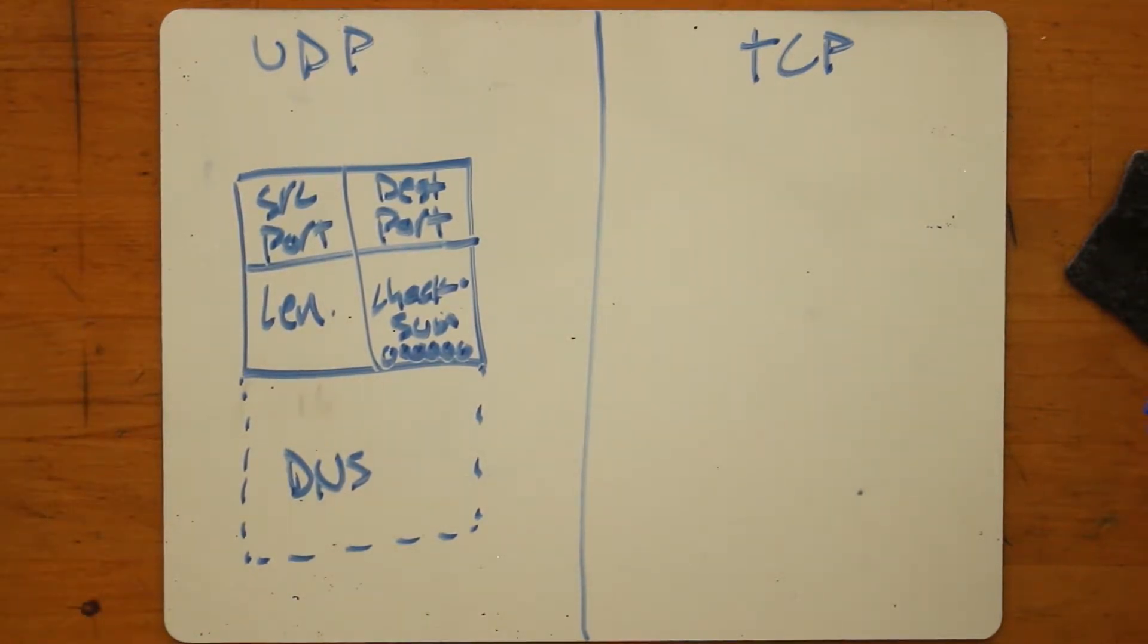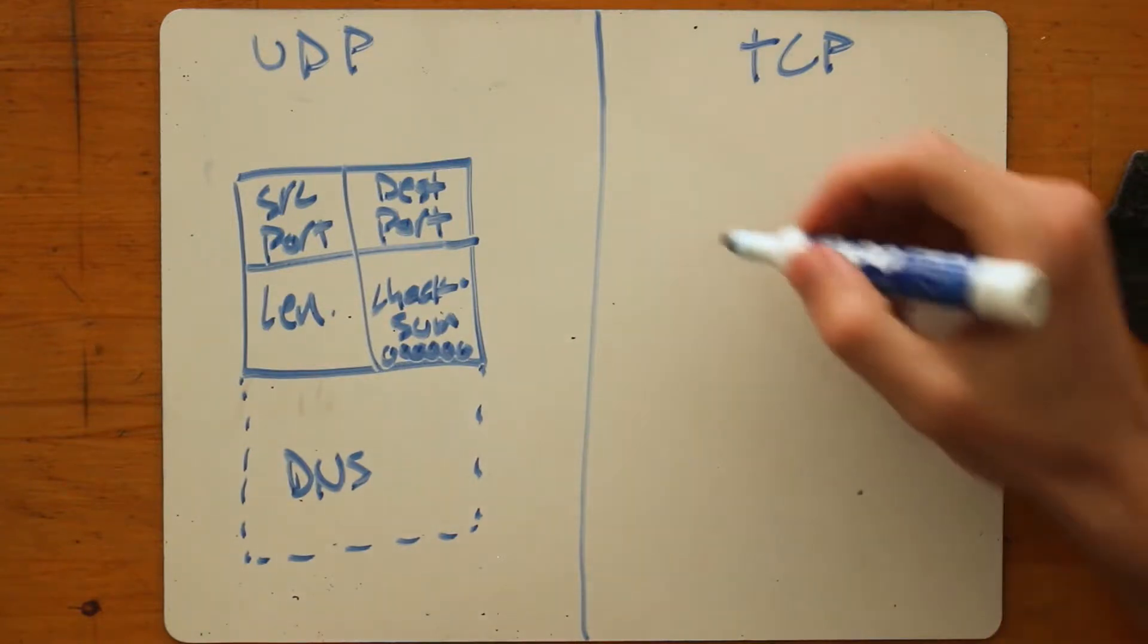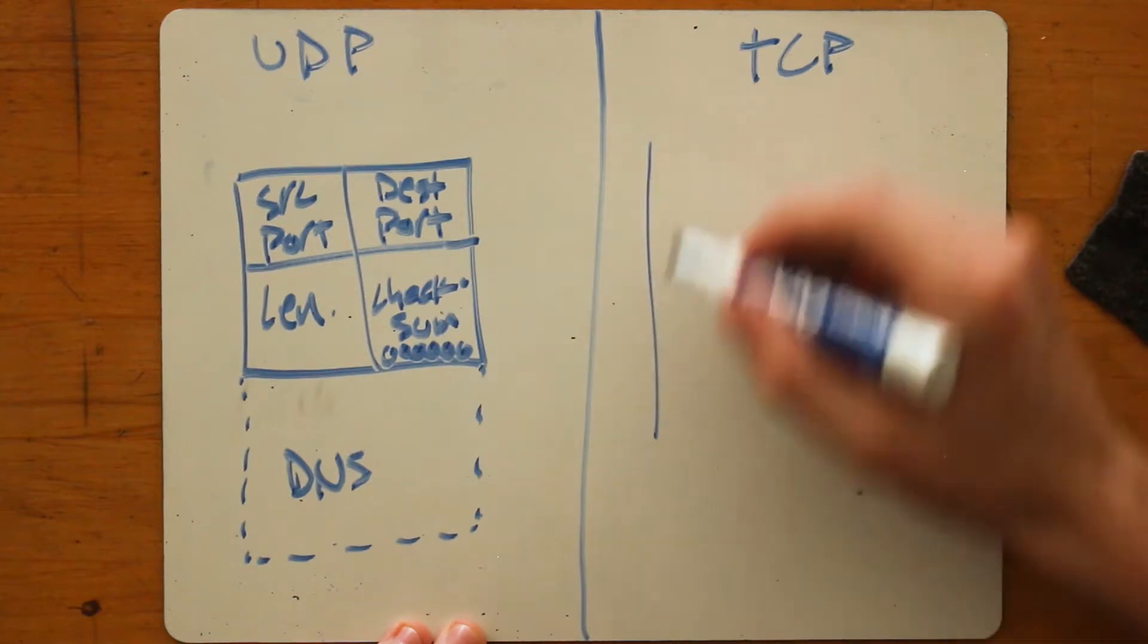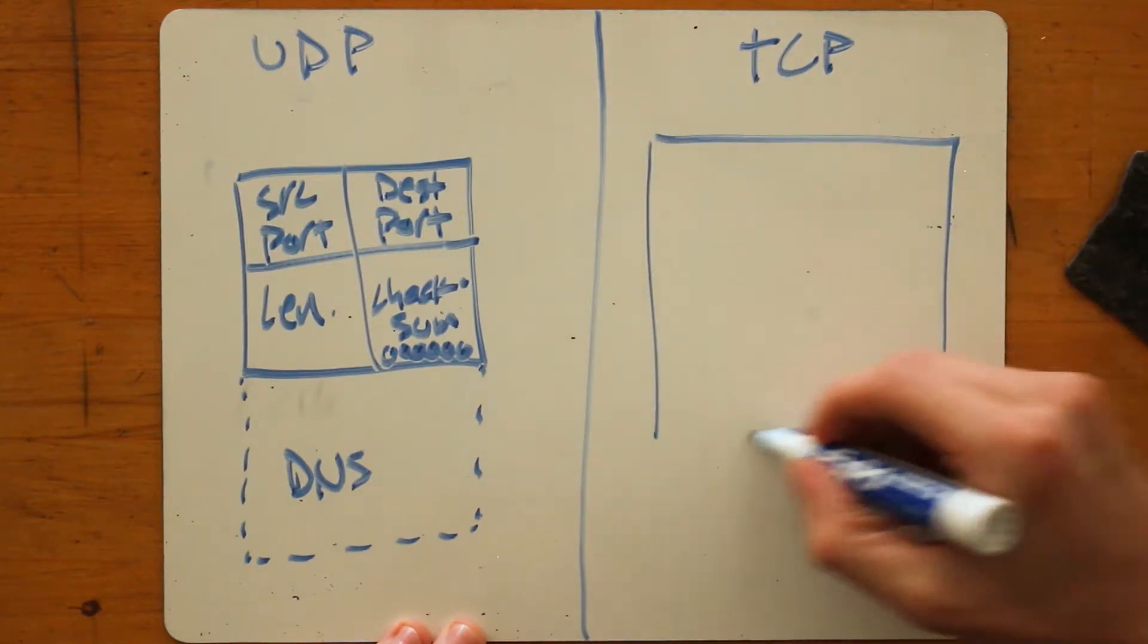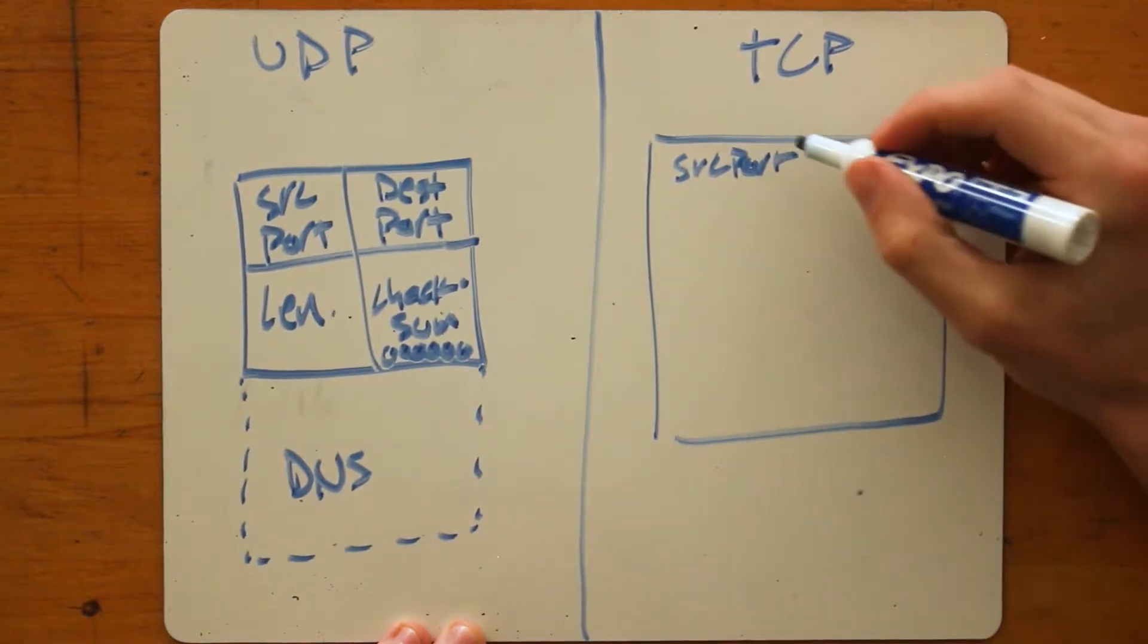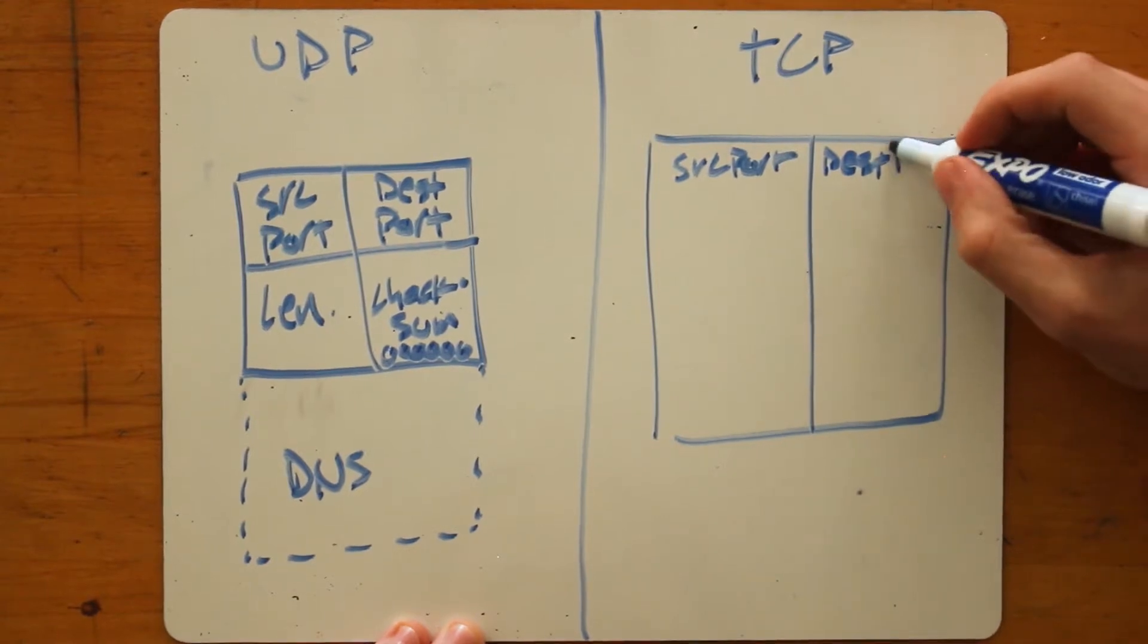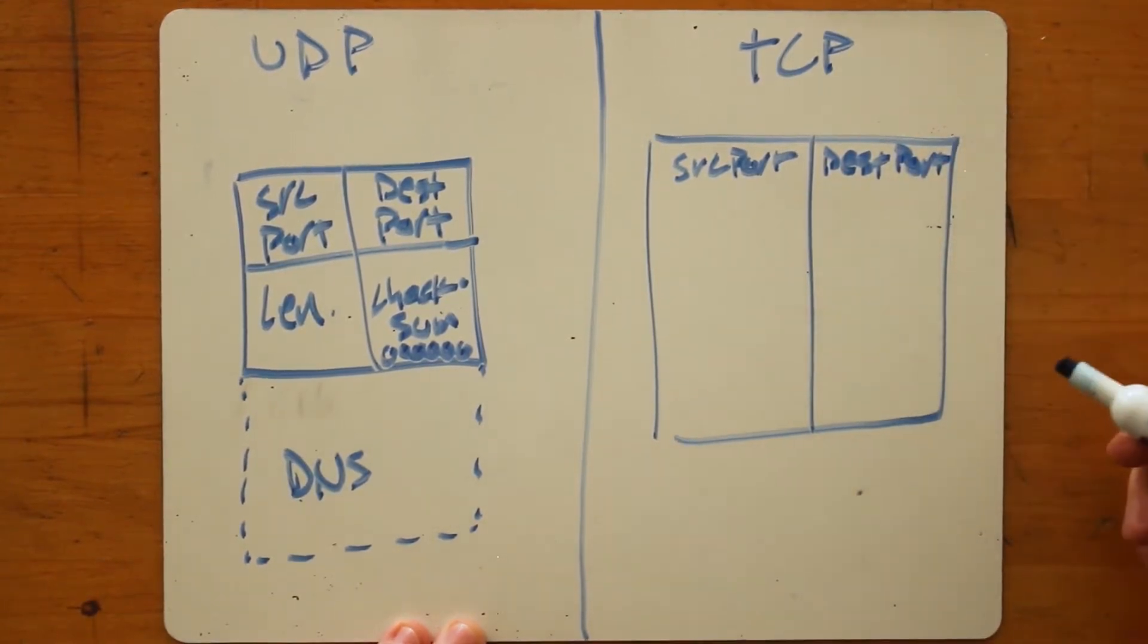TCP, transmission control protocol, on the other hand, has many more fields, and some of the options are optional. So we're not going to dive into all of them. But the mandatory fields are first, you got the source port, just like UDP. You've got the destination port, just like in UDP.